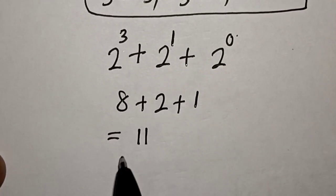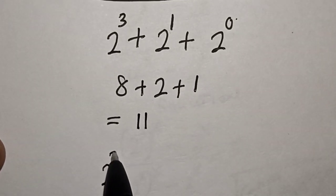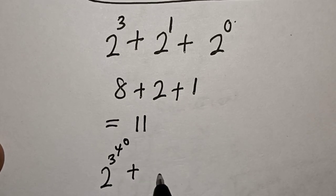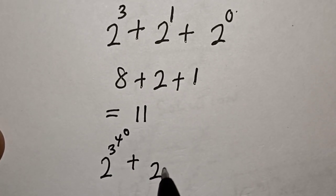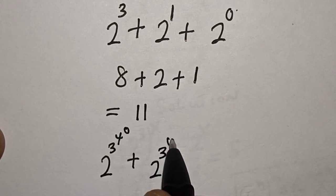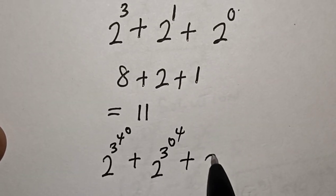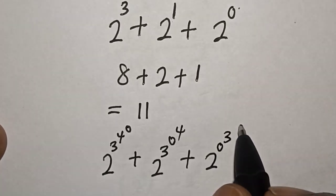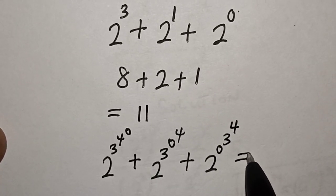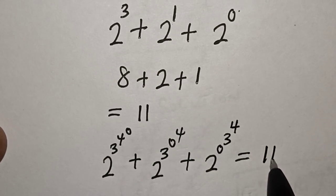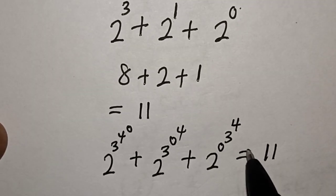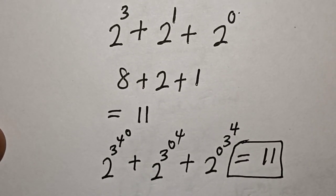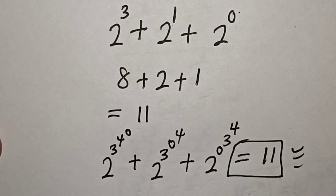Therefore, 2 raised to power 3 raised to power 4 raised to power 0, plus 2 raised to power 3 raised to power 0 raised to power 4, plus 2 raised to power 0 raised to power 3 raised to power 4, is equal to 11. If you enjoyed the class, please don't forget to like, share, comment, and subscribe. Thank you.